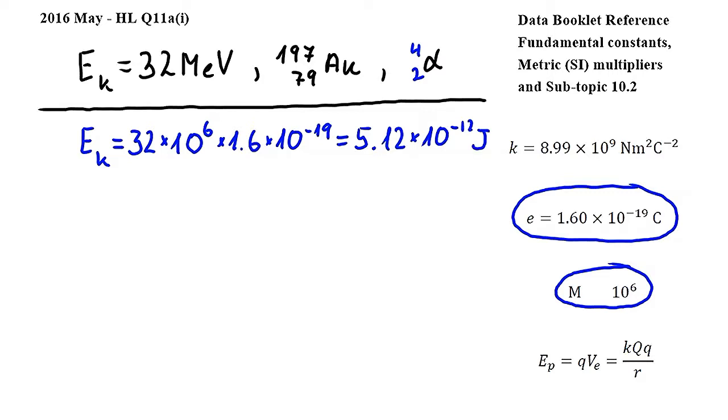The key point to remember here is that at the position of closest approach, we can equate the kinetic energy to the electrical potential energy of the alpha particle. In other words, eK is equal to eP.